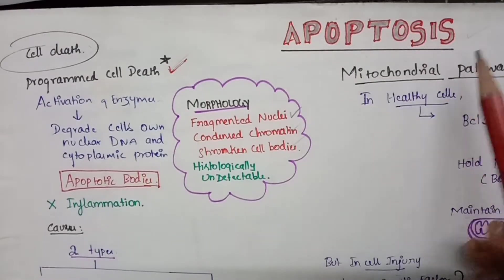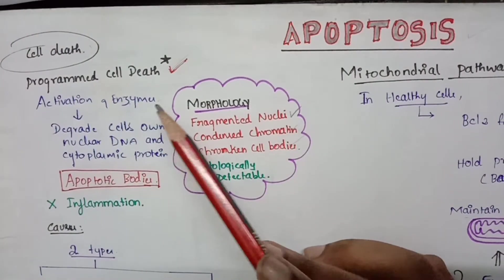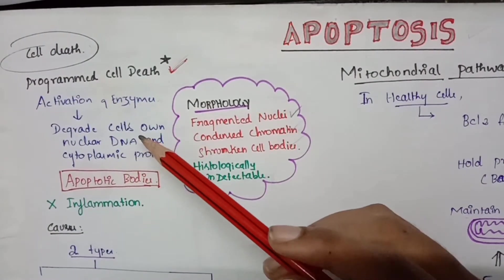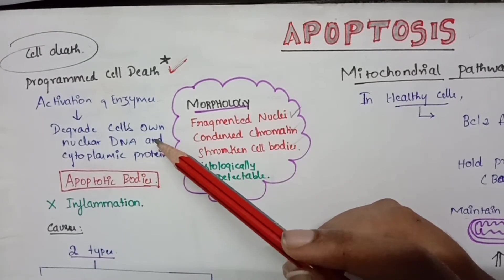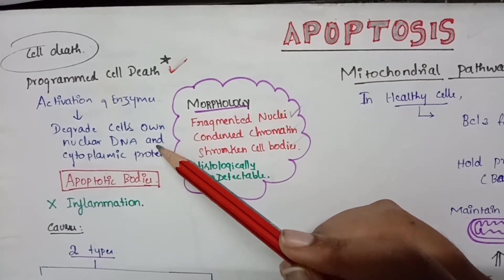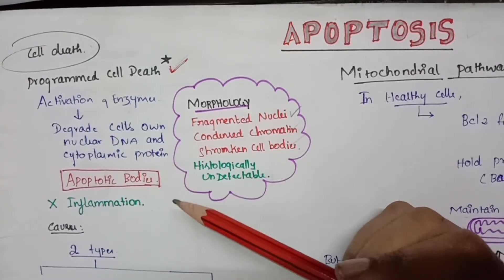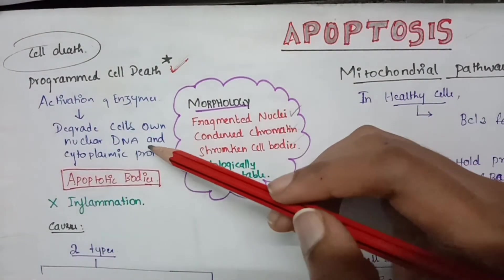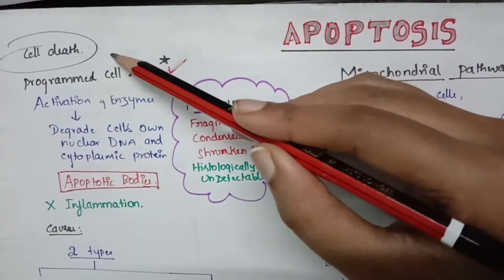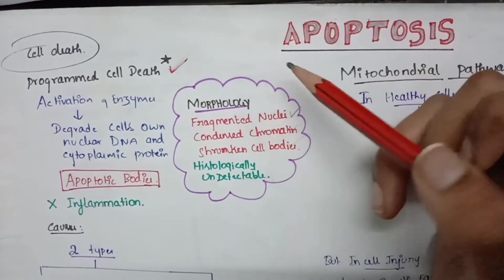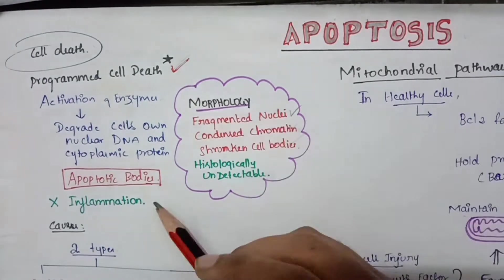Apoptosis is a process in which enzymes are activated, leading to degradation of cells, nuclear DNA, and cytoplasmic proteins, resulting in cell death. Apoptosis is also known as programmed cell death.